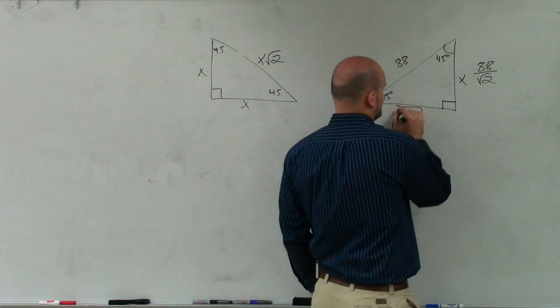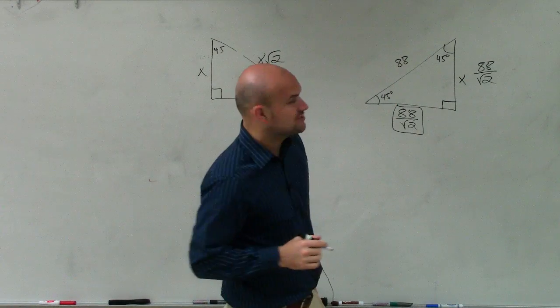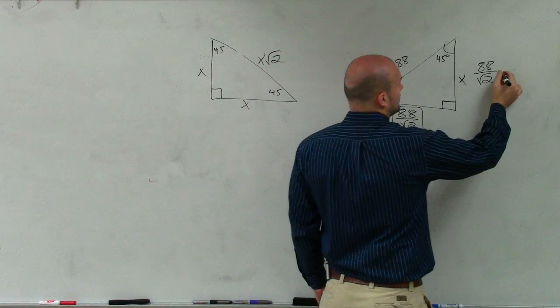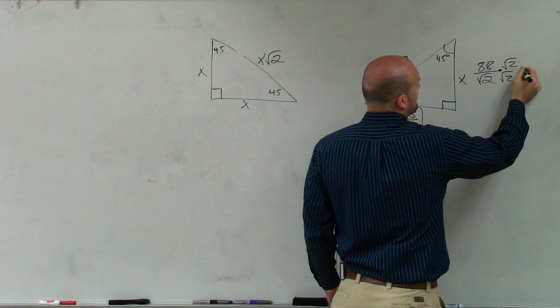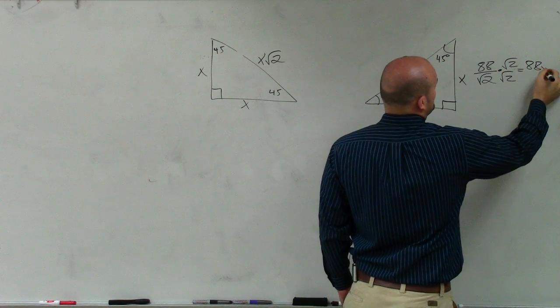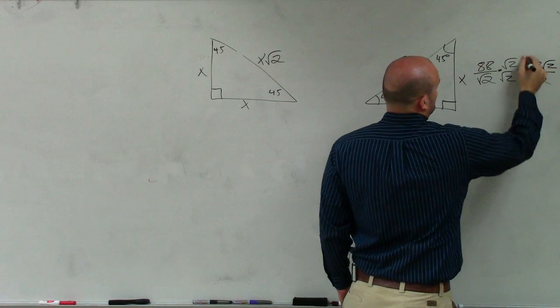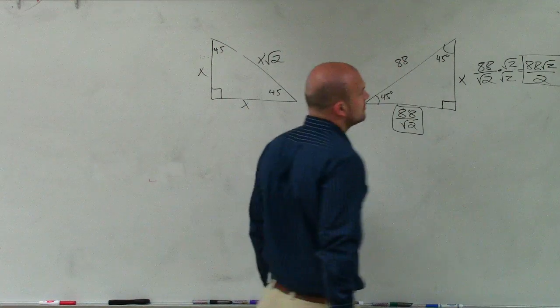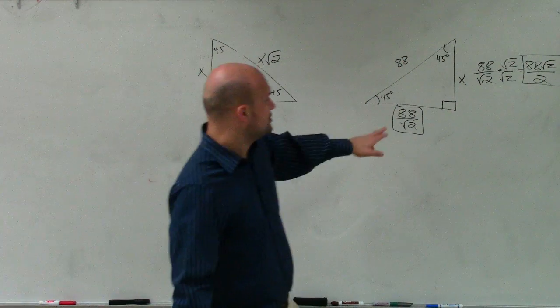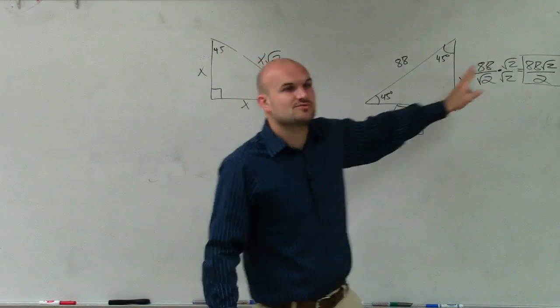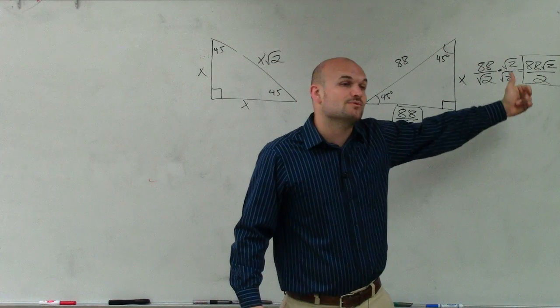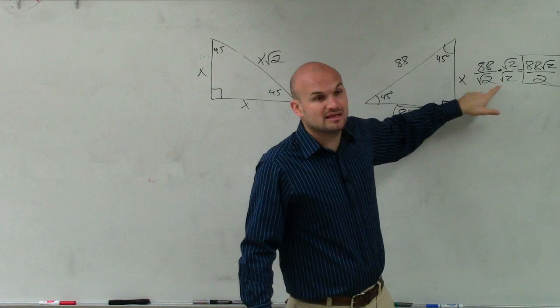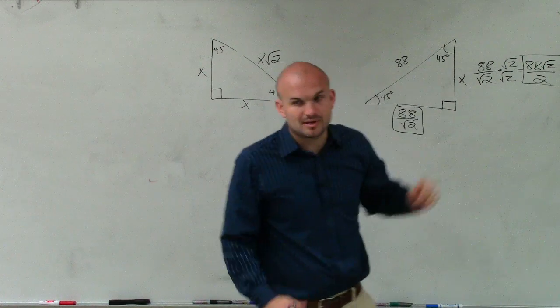this would be it. But we also like to rationalize our denominator, which would be to multiply by the square root of 2 on the top and the bottom, so our final answer would look like that. But you just notice that these are exactly the same. This is just written in a different format. The reason why we multiply by the square root of 2 on the top and bottom is that it eliminates the square root in your denominator.